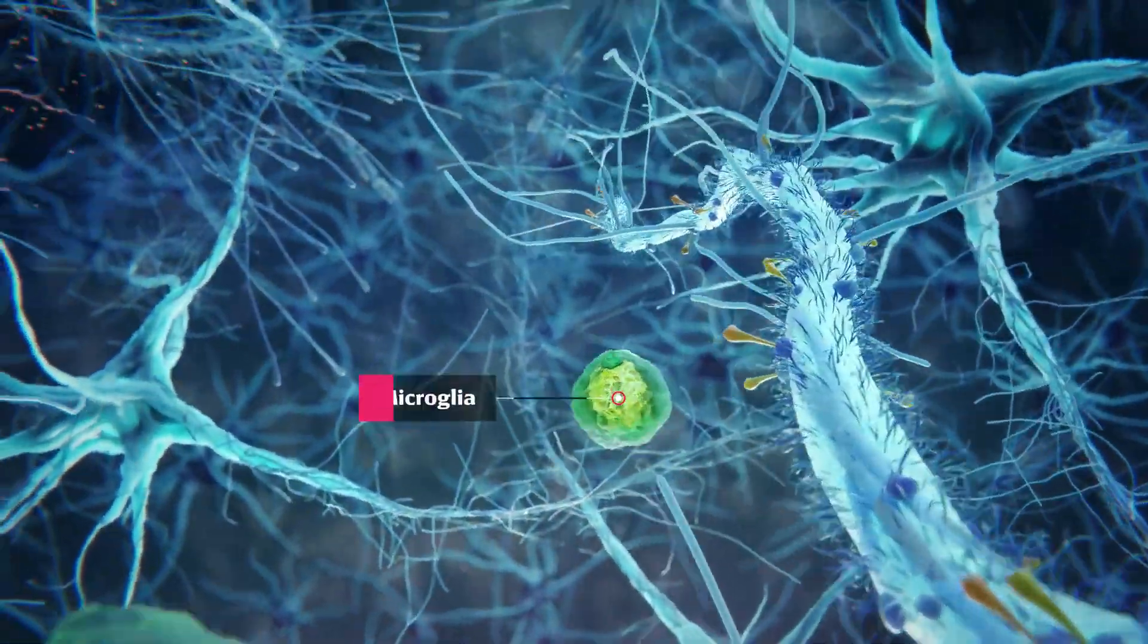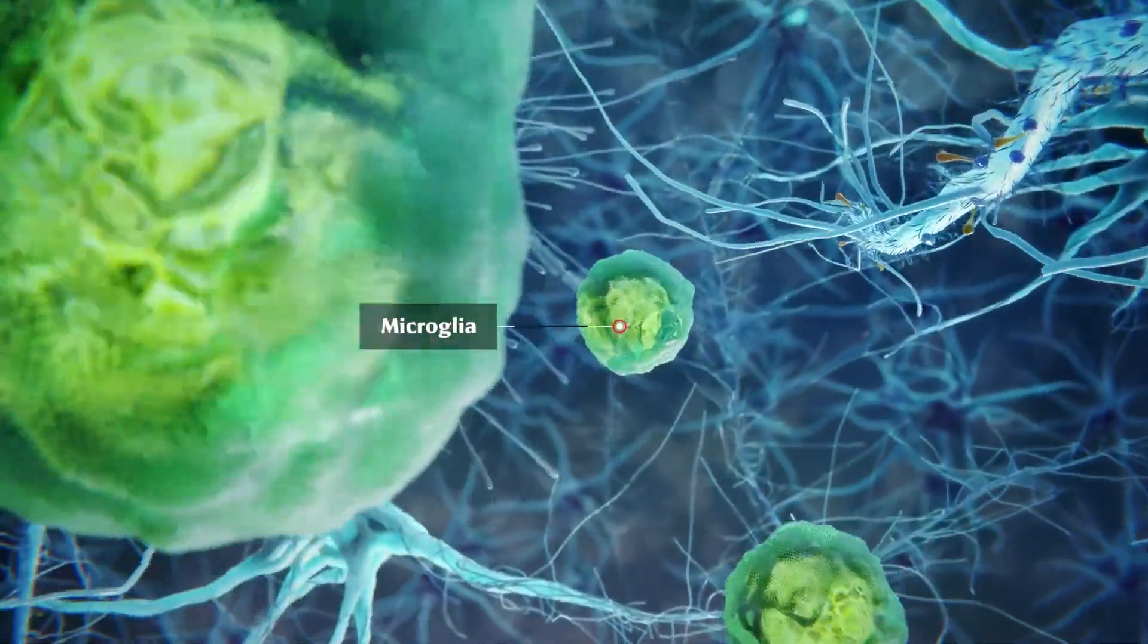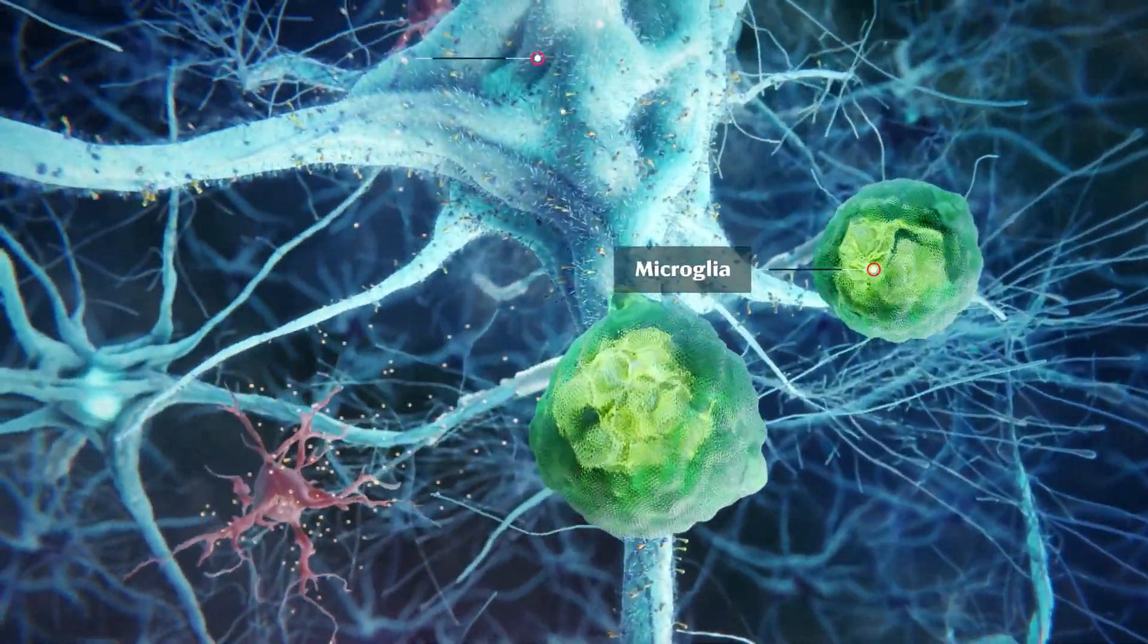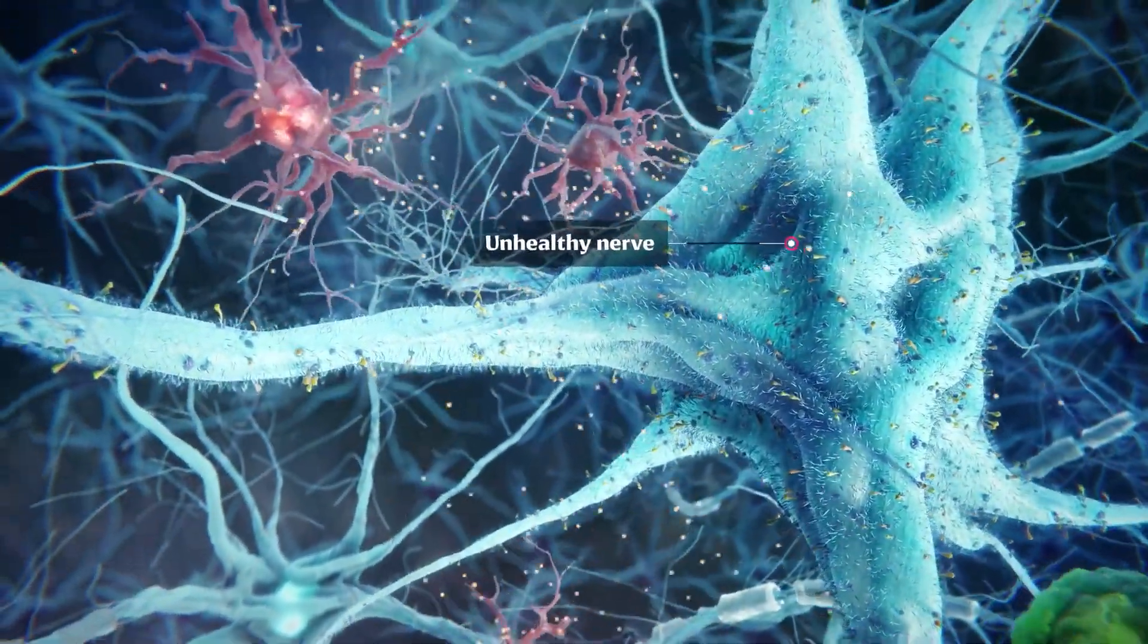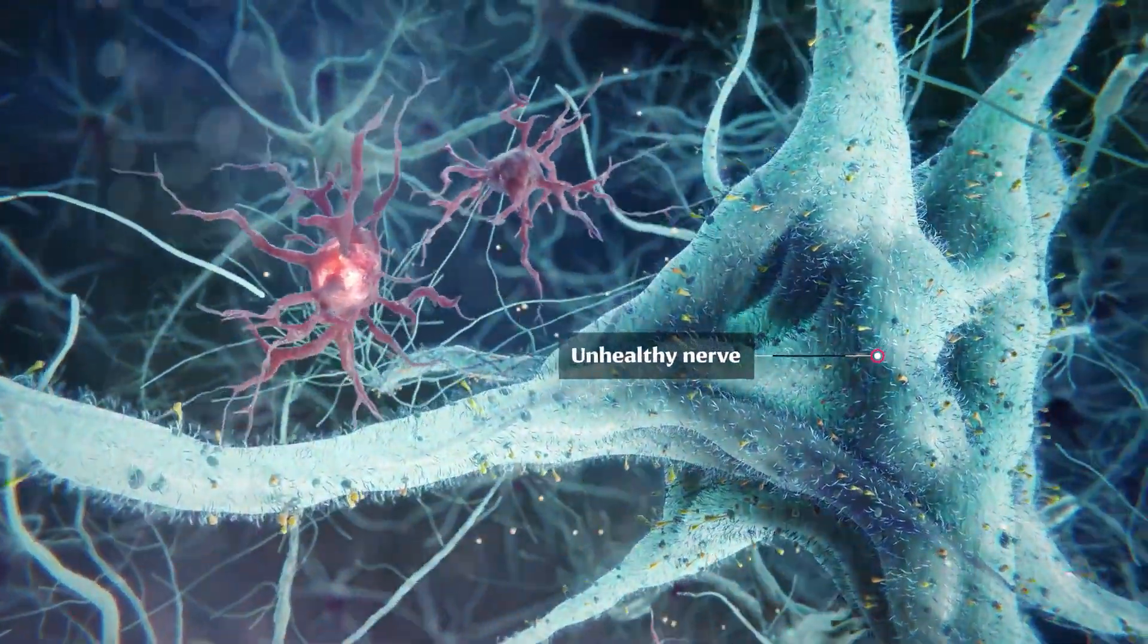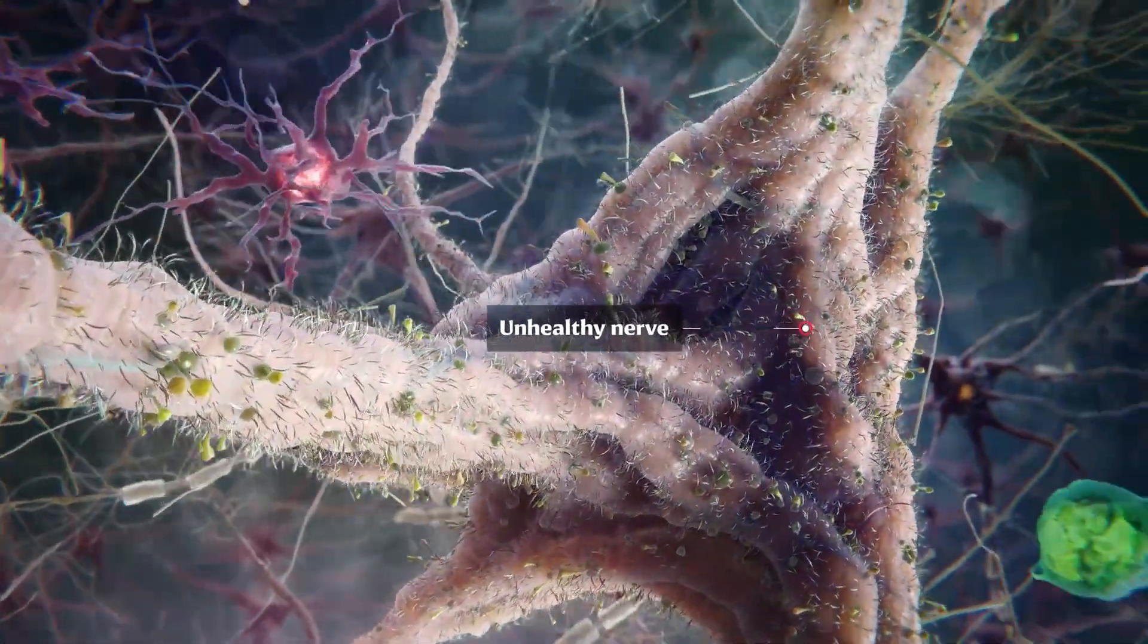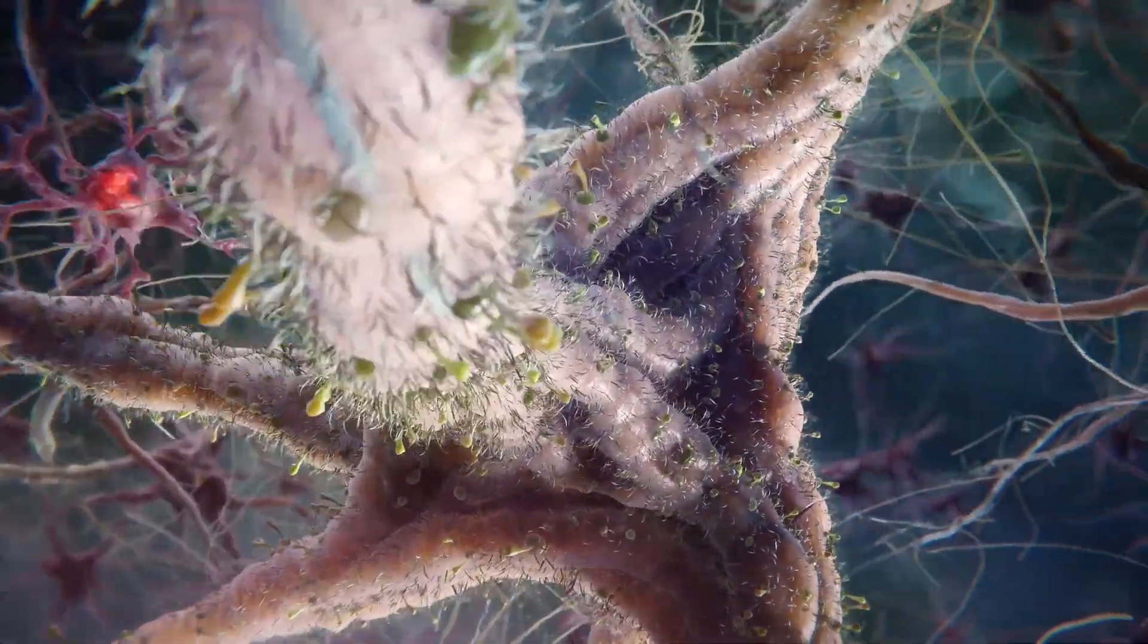Microglia, other important brain cells, drive inflammatory responses against pathogens in the brain and spinal cord. In ALS, astrocytes lose their nerve support and microglia promote chronic inflammation. Both of these contribute to loss of function and nerve cell death.